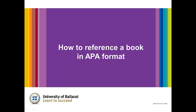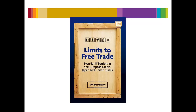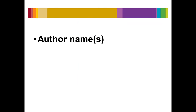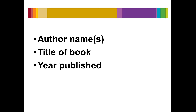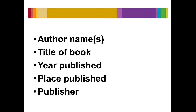How to Reference a Basic Book in APA Format. A book requires five pieces of identifying information: name of author or authors, title of book in full, year of publication, city in which the book was published, and name of the publishing company.